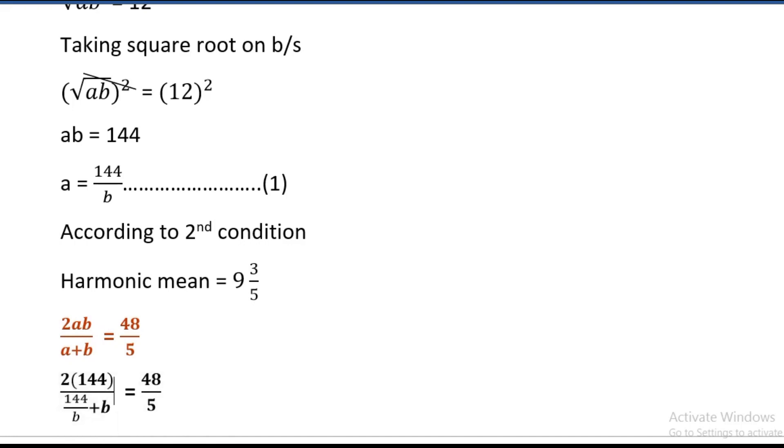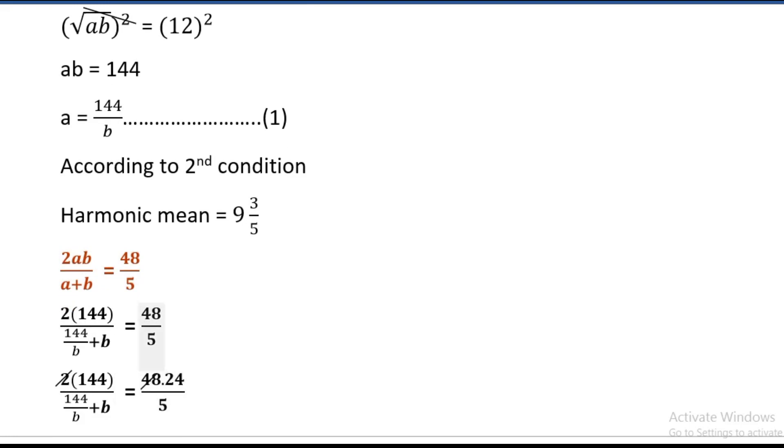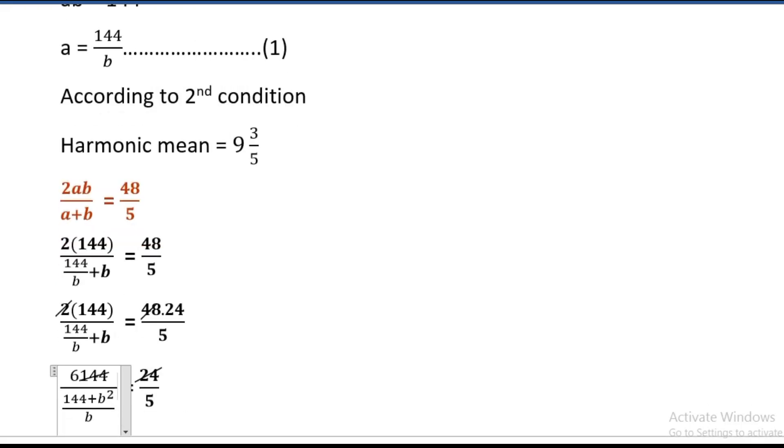2 times 144 is 288, which simplifies to 24 times 48. Next, 144 divided by, denominator LCM is b, so 144 plus b times b equals 24 divided by 5.